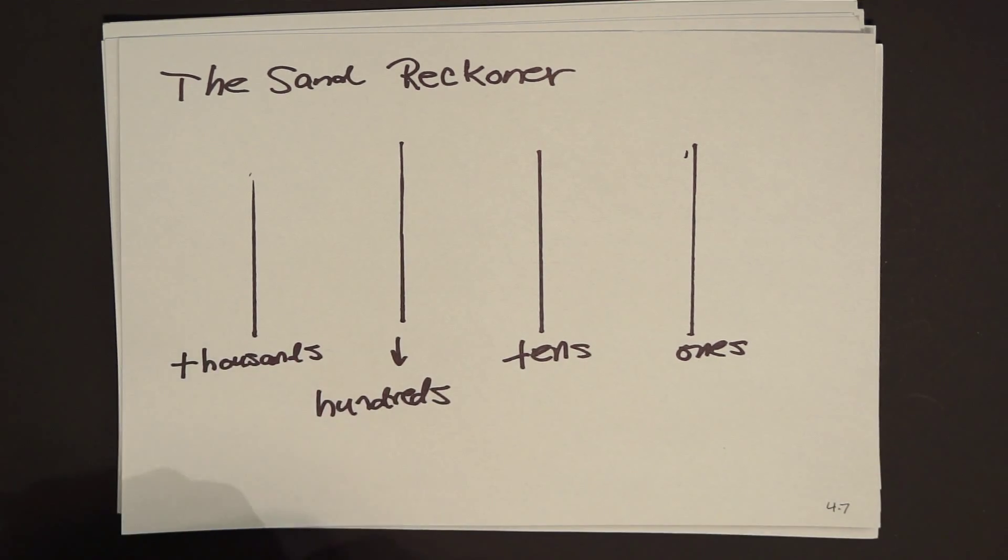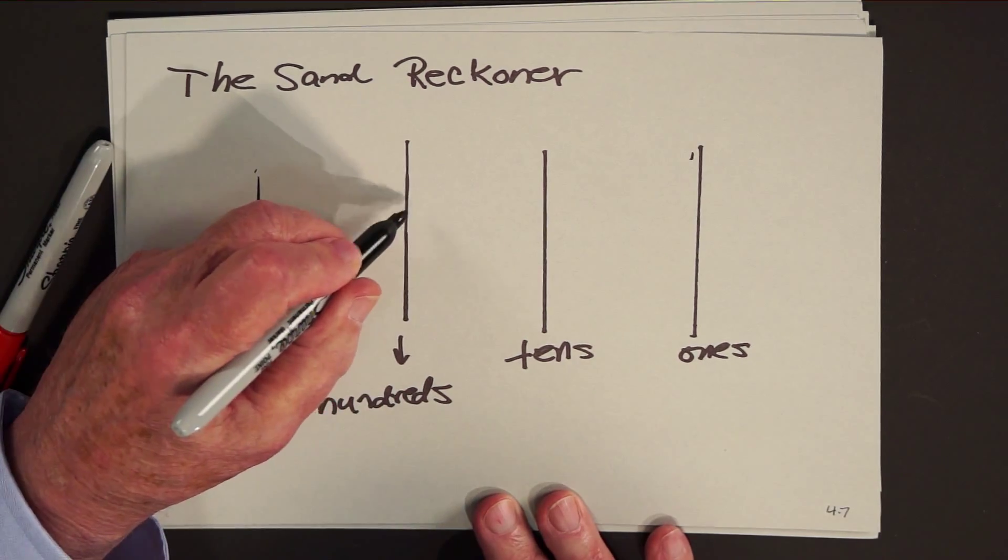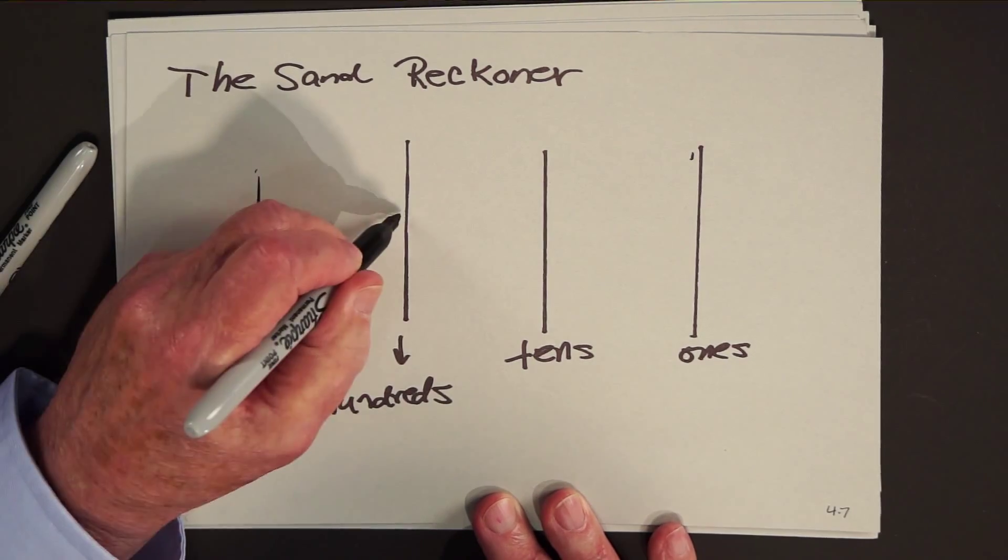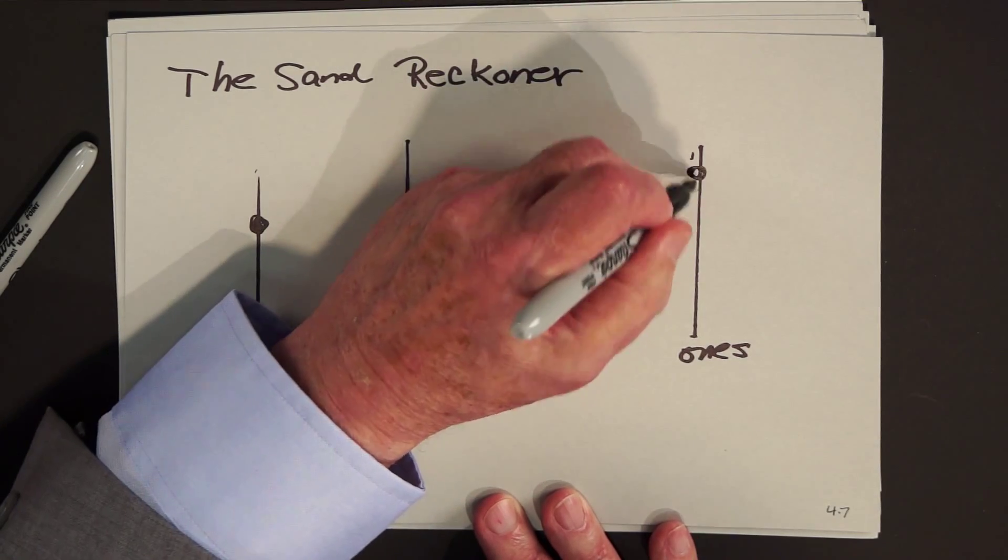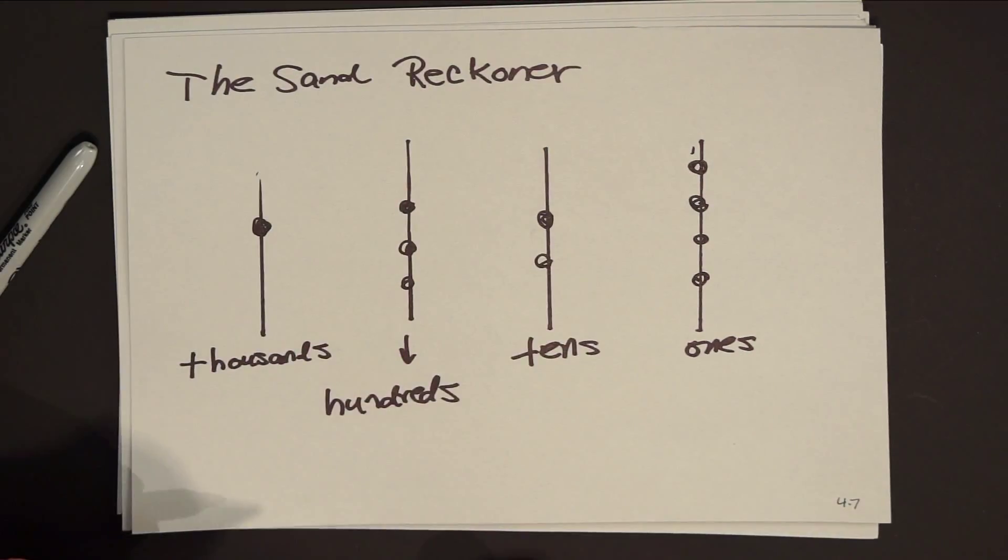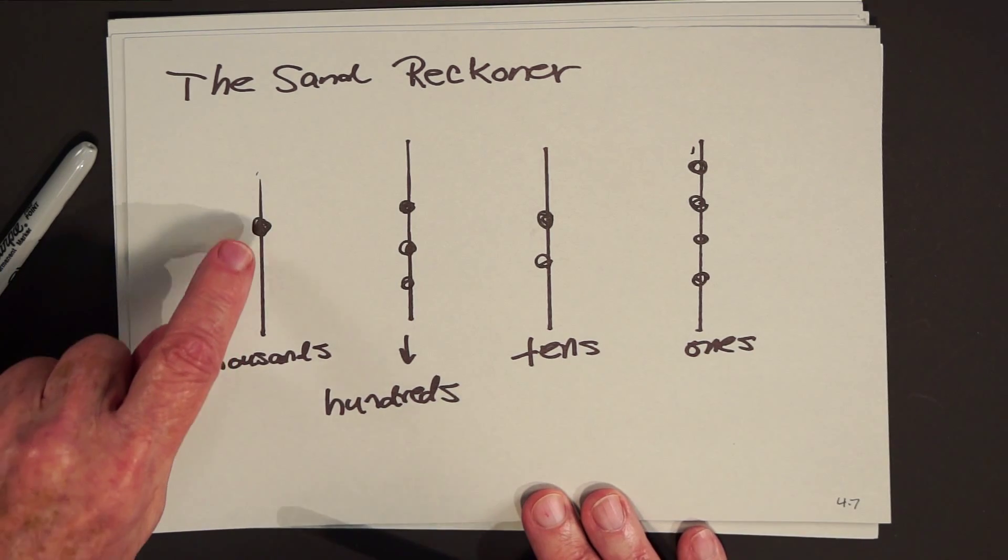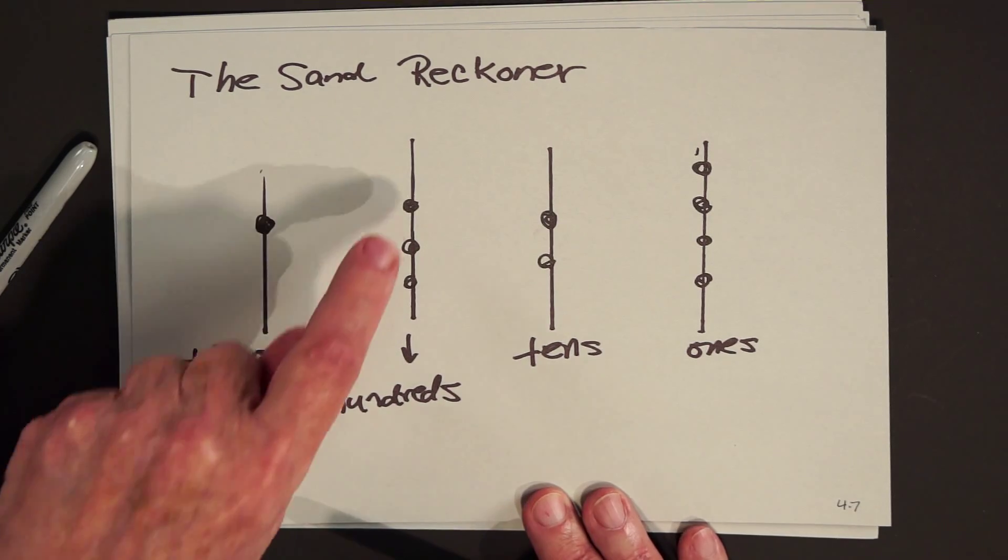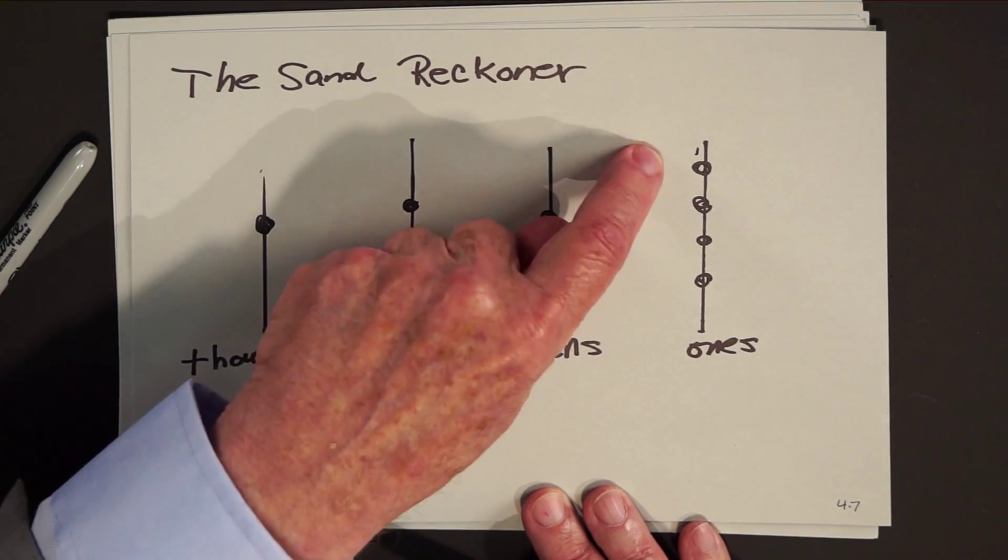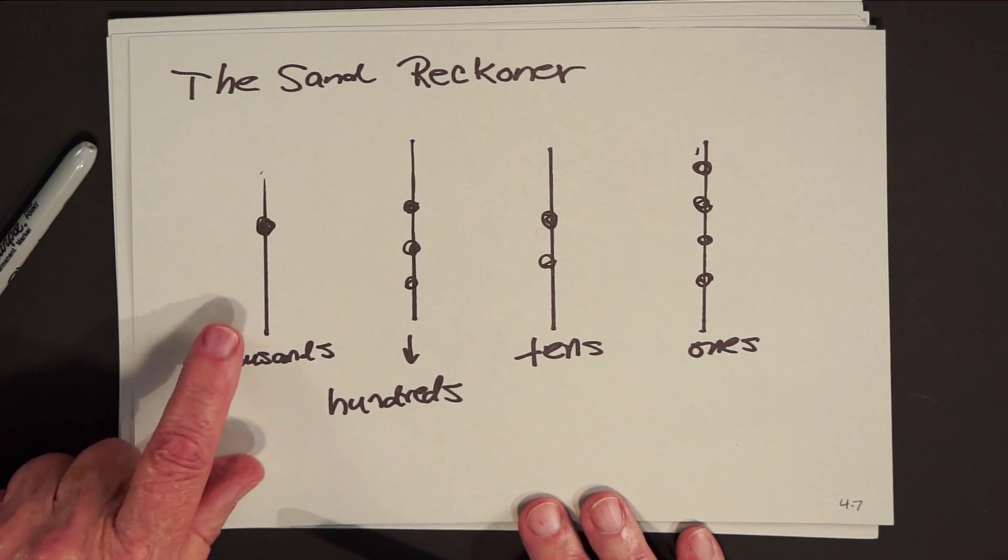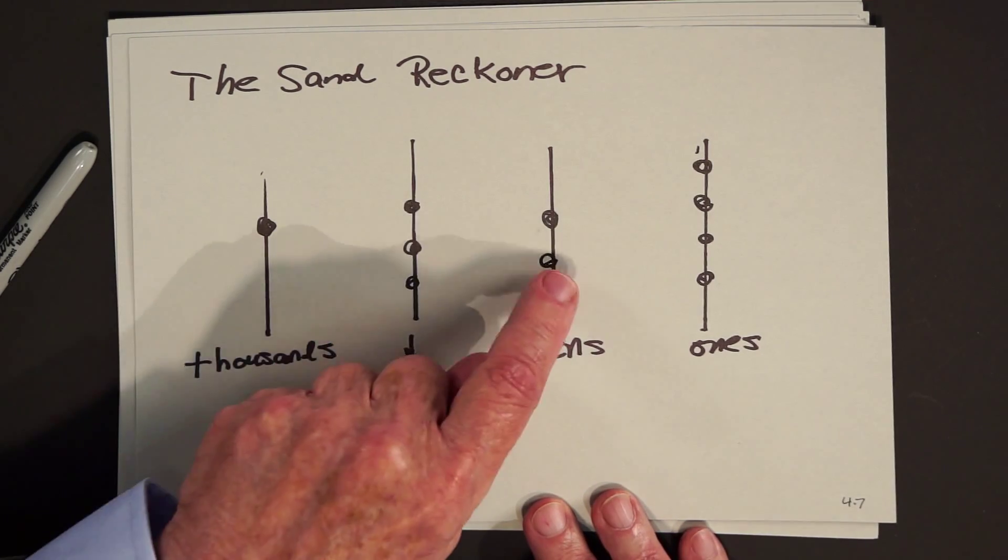And now to keep track of the denominations. For example, suppose you saw something like this. They took pebbles, put them on a line, and what would this say? This is still one pebble, but it represents thousands. This is three pebbles, but it represents hundreds. Two pebbles, stones actually. Four represents one. This would be the Abacus, the sand reckoner's way of saying 1,324.